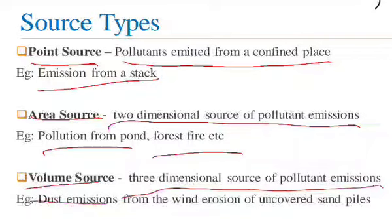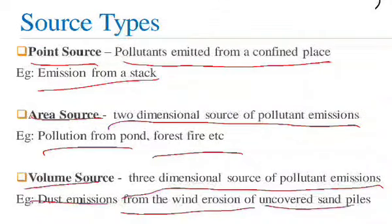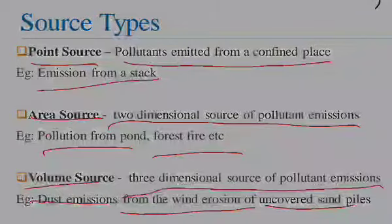This is the three-dimensional source of pollutants. Examples include dust from wind erosion and uncovered sand piles. Dust from wind erosion is a classic volume source example.